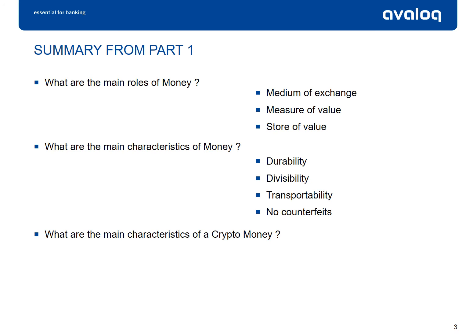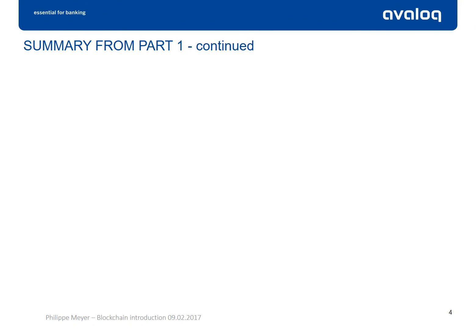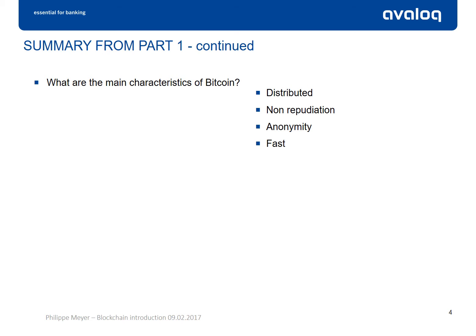What are the main characteristics of a crypto-money? Trust without intermediary, speed, anonymity, and low transaction fees. What are the main characteristics of a Bitcoin network? A Bitcoin network provides distribution, non-repudiation, anonymity, and is fast, at least compared to traditional payment networks.